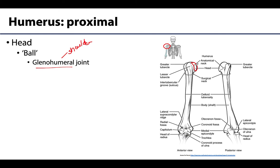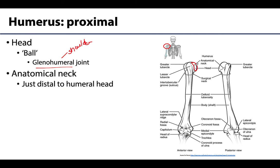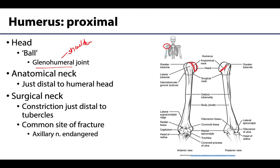The head will be nice and smooth because of the articular cartilage that sat there during life. Just at the edge of the smooth surface, before you get to the tubercles, you have the anatomical neck — just distal to the head, a slightly pinched-in area. This is a true neck, common in long bones that have a head associated with them. The humerus also has a second structure called the surgical neck.